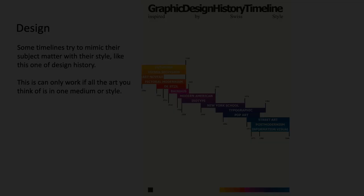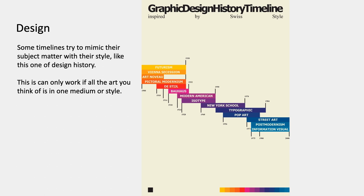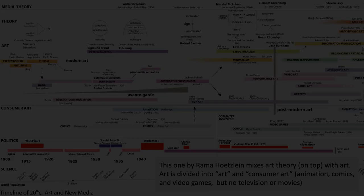Sometimes timelines try to mimic their subject matter with their style. This is one that shows design history — a graphic design history timeline inspired by Swiss style. Of course, this can only work if all the art you think of belongs to one medium or style. Then you could try making a timeline in the style of the art you study. I could imagine a fashion timeline, but it would have to be pretty homogeneous — you can't stick in monuments; it would have to be all the same kind of art.